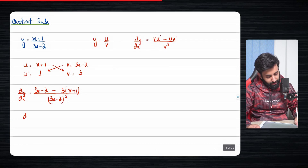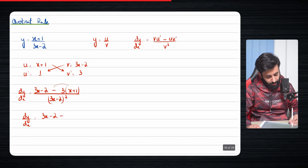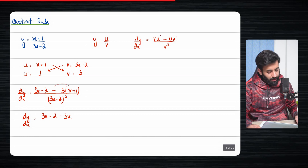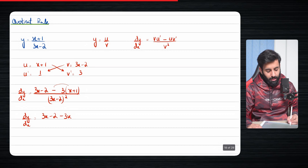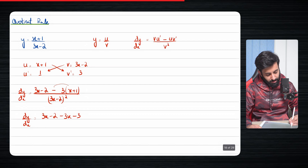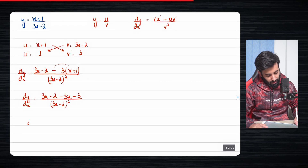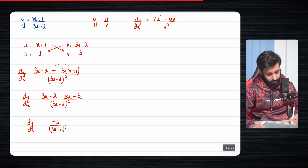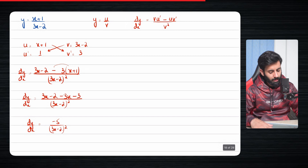There's a bit of simplification required. You have 3x minus 2, then minus 3 multiplied by x gives minus 3x, and minus 3 multiplied by plus 1 gives minus 3. So 3x and minus 3x cancel out. In the numerator you're left with minus 2 minus 3, which equals minus 5. So the answer is minus 5 over 3x minus 2 the whole thing squared.